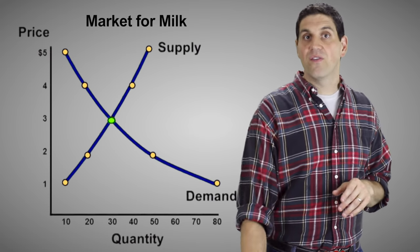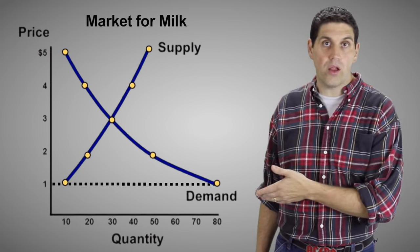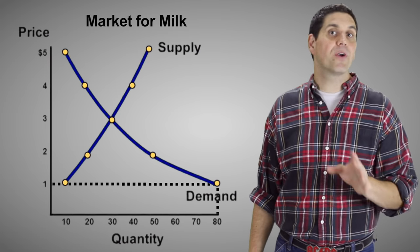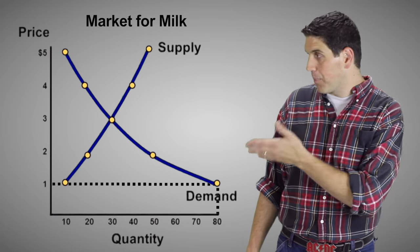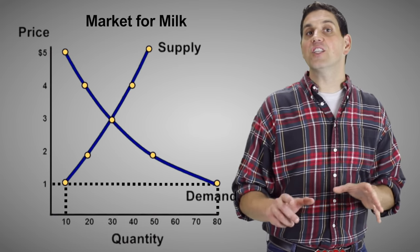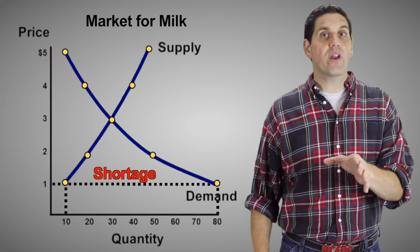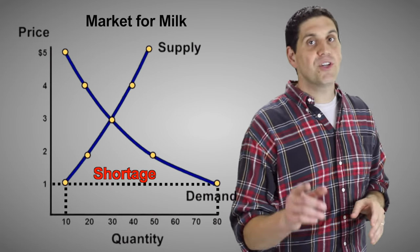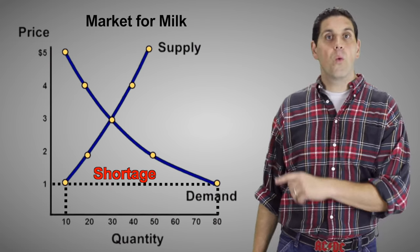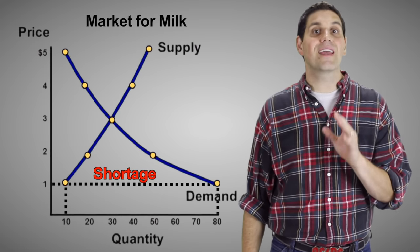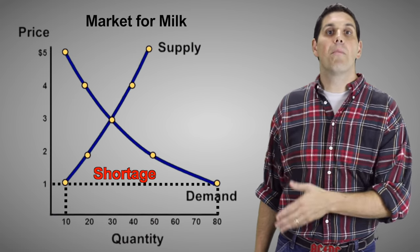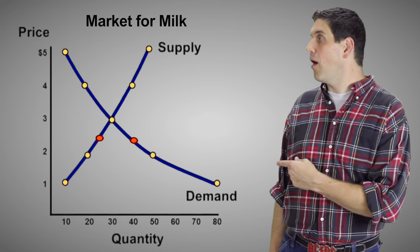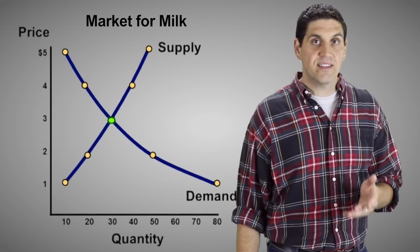But what if the price fell further down to $1? At a low price, consumers want to buy 80 gallons of milk, but producers don't want to produce very much — they're only going to produce 10 gallons. This creates a shortage. A shortage is when the quantity demanded is greater than the quantity supplied. In this situation, the shortage is 70 gallons — the quantity demanded of 80 minus the 10 quantity supplied. And again, unless something weird is happening in this market, the shortage is going to fix itself.